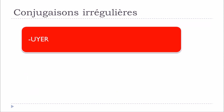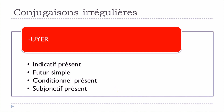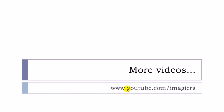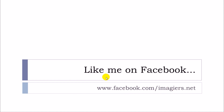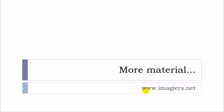So let's remember: if you've got verbs ending with U, Y, E, R, then l'indicatif présent will be slightly modified, as well as le futur simple, conditionnel présent, and subjonctif présent. If you want more videos, youtube.com/imagier is waiting for you. I'm also on Facebook, and more material can be found at www.imagier.net. Have a great day, bye-bye.